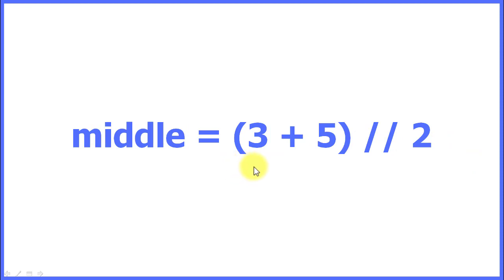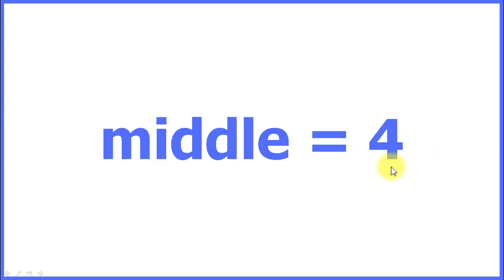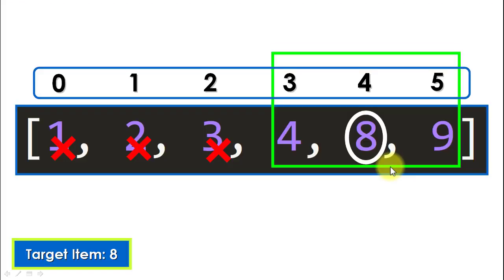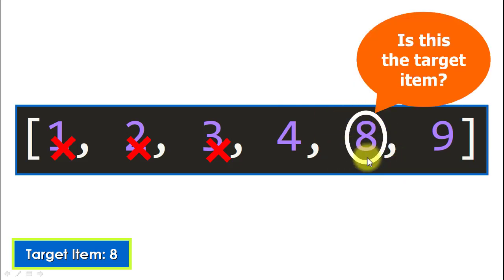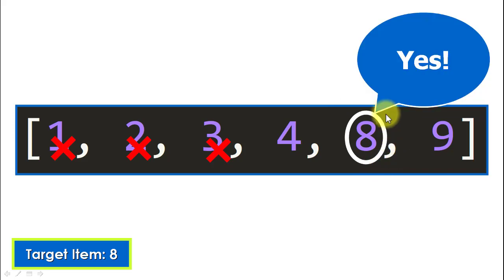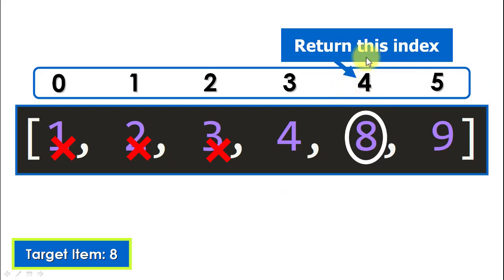We add the start index and the end index and divide by two using floor division: three plus five equals eight, divided by two gives four. The middle index is now four, which corresponds to the element eight. We ask again: is this the target item? In this case, yes — this is the element we were looking for.